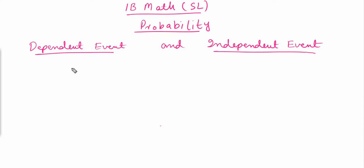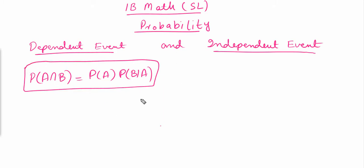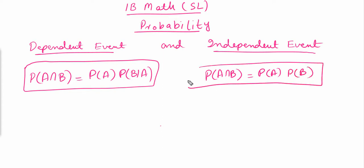The condition for dependent events is: P(A ∩ B) = P(A) × P(B|A). The condition for independent events is: P(A ∩ B) = P(A) × P(B). Two events are independent if the product of their individual probabilities equals P(A ∩ B). These are the two conditions for independent and dependent events to keep in mind when solving questions.